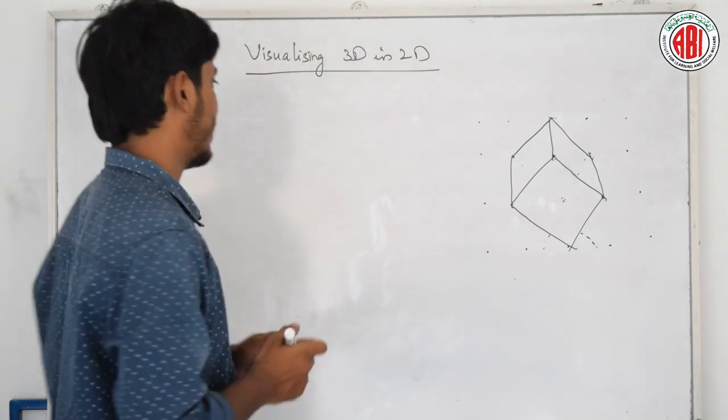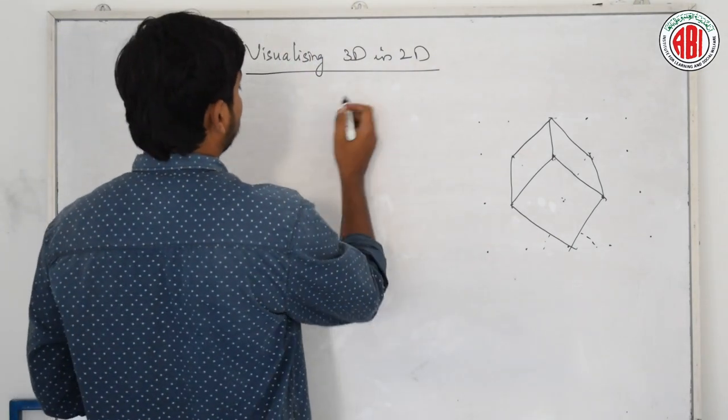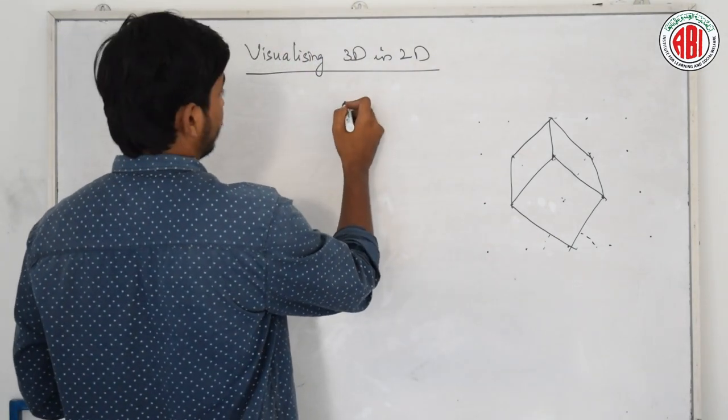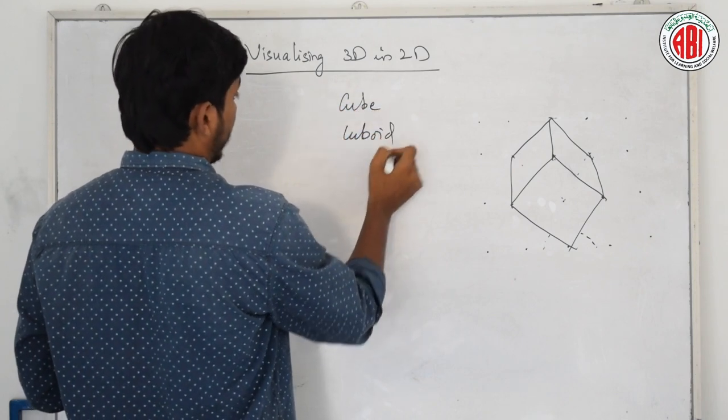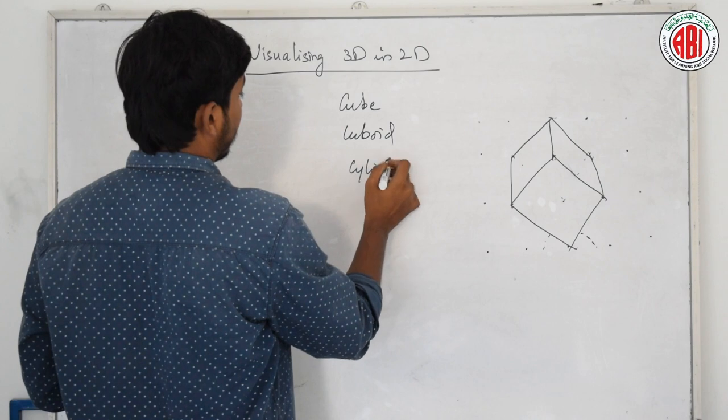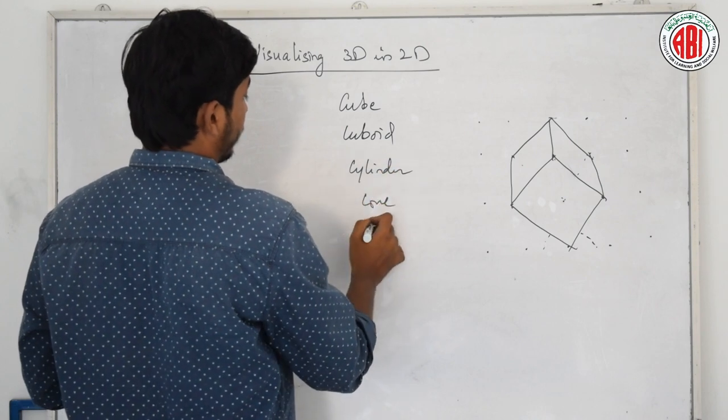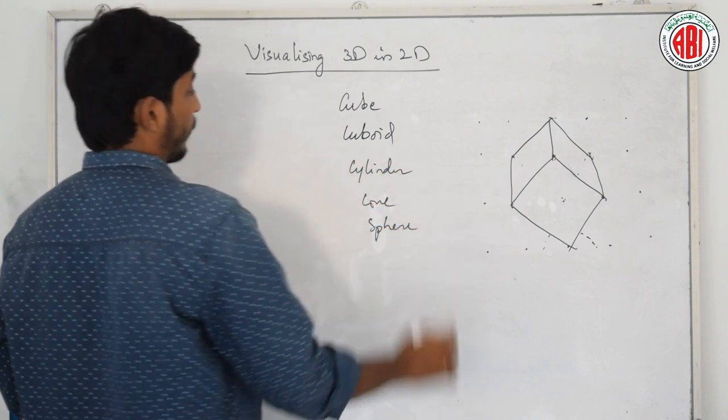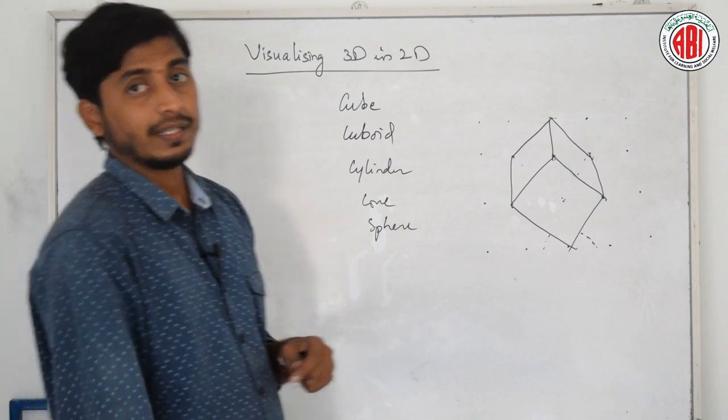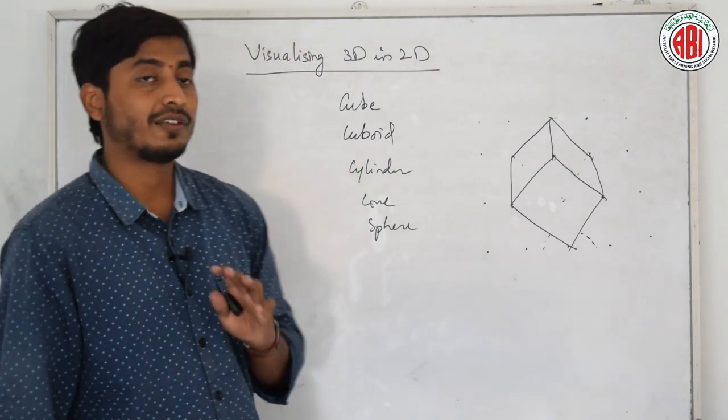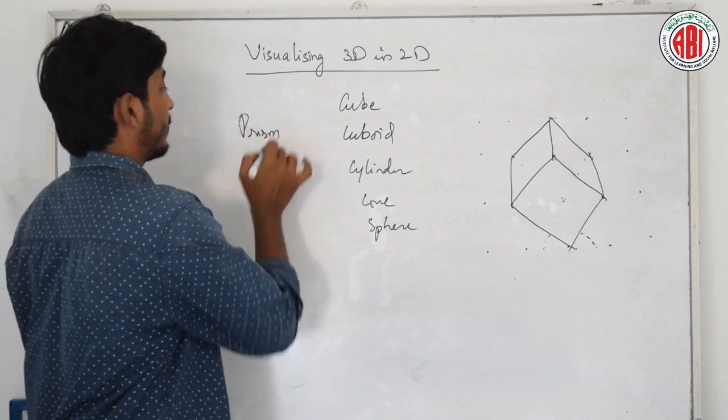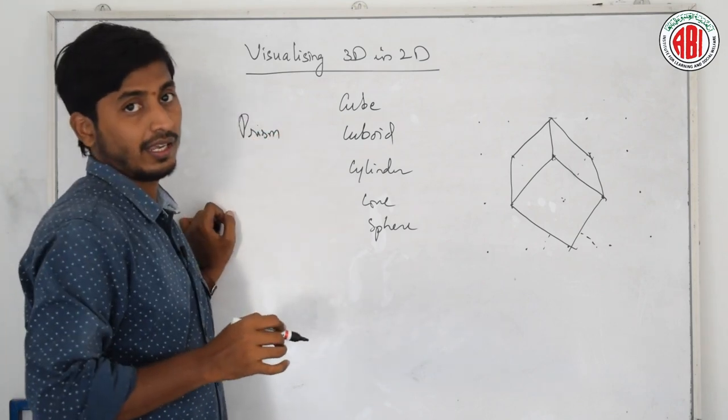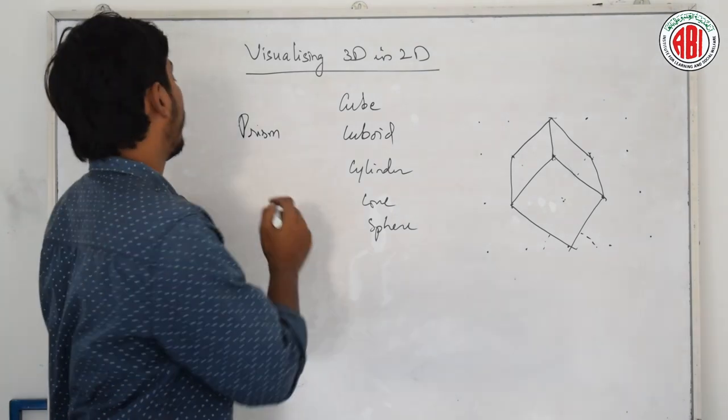Using plane sheets, we can realize many solids. What are the different solids you know? Cube, cuboid, cylinder, cone, sphere. But other than this, there are few basic things. Those are called as prism and pyramid.